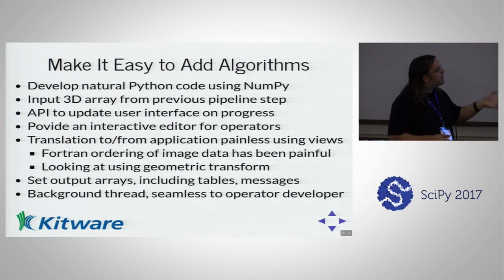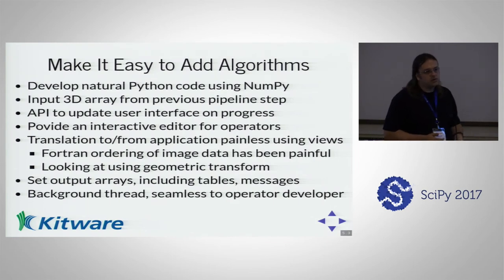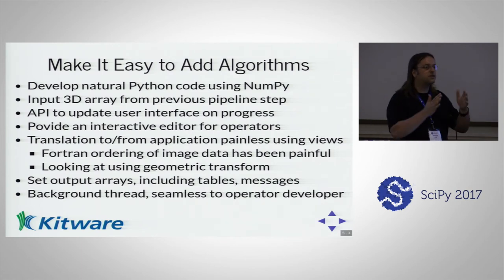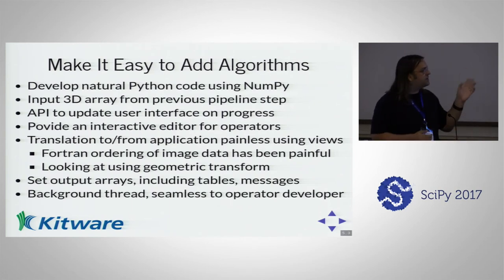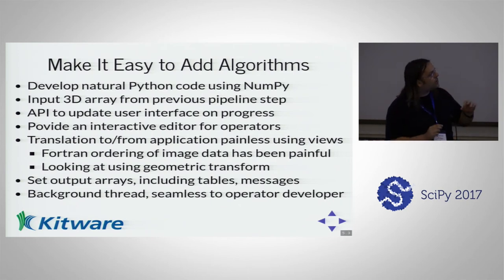We have an interactive operator editor, and we do translation to and from using views where possible to avoid copies because the data tends to be quite large — often 500 megabytes to a gigabyte and a half. We've done a lot of work on memory management. We work on a destructive pipeline, so we don't blow up the pipeline size — once you've run an operation, none of the intermediate steps are stored. The obvious disadvantage is that you have to rerun the entire thing, so more recently we've added caching steps. When an operation takes three hours, you can mark it as a cached step and have a middle ground where you don't rerun everything.